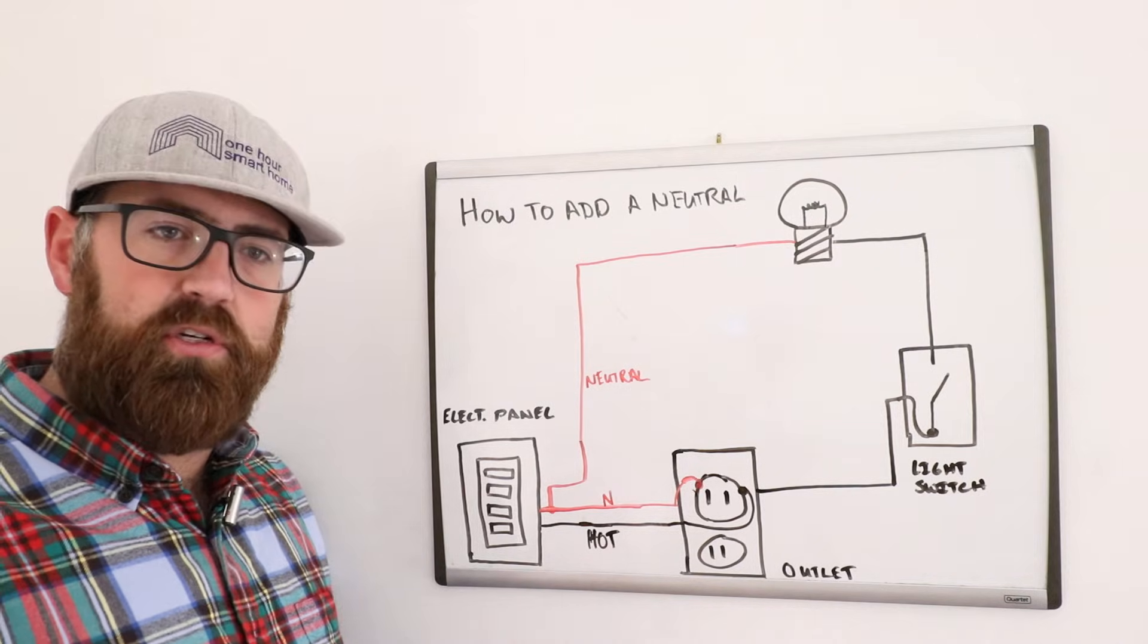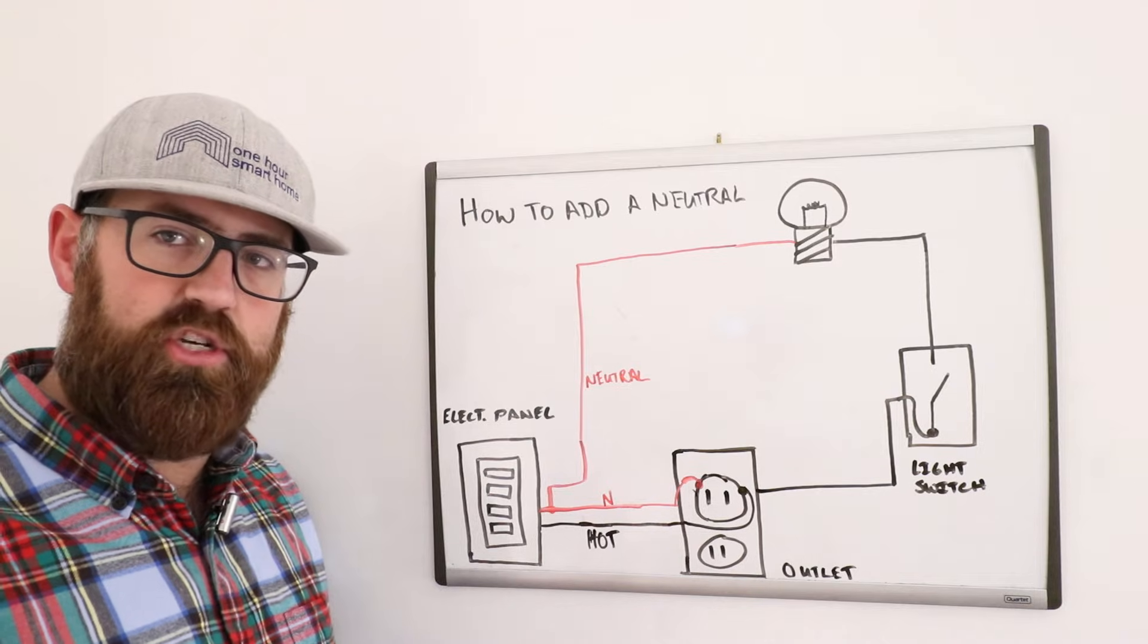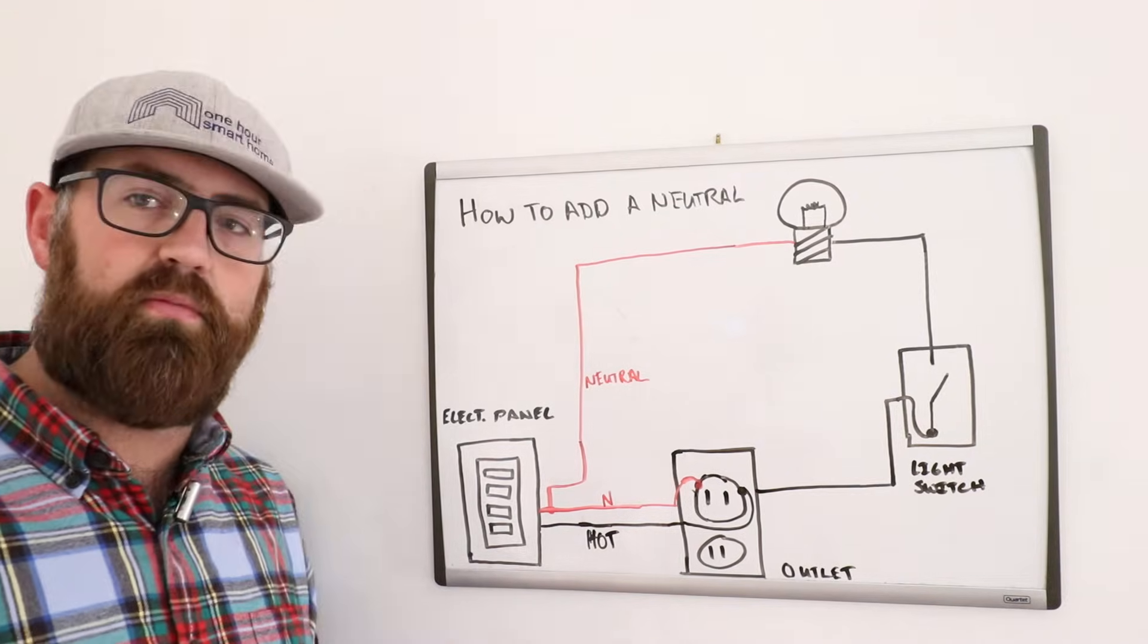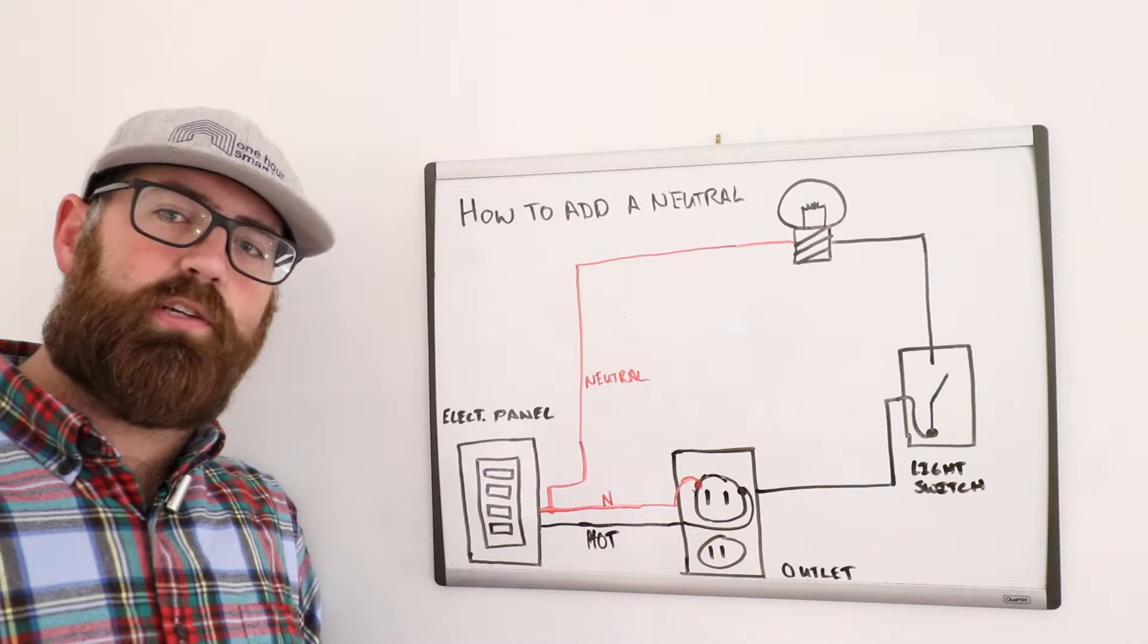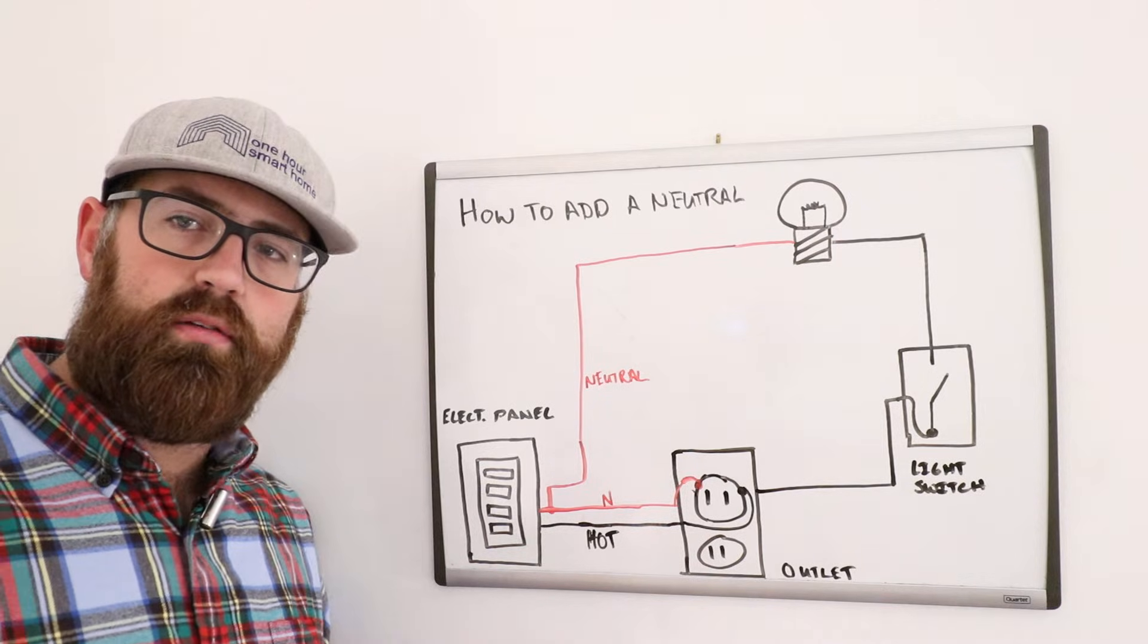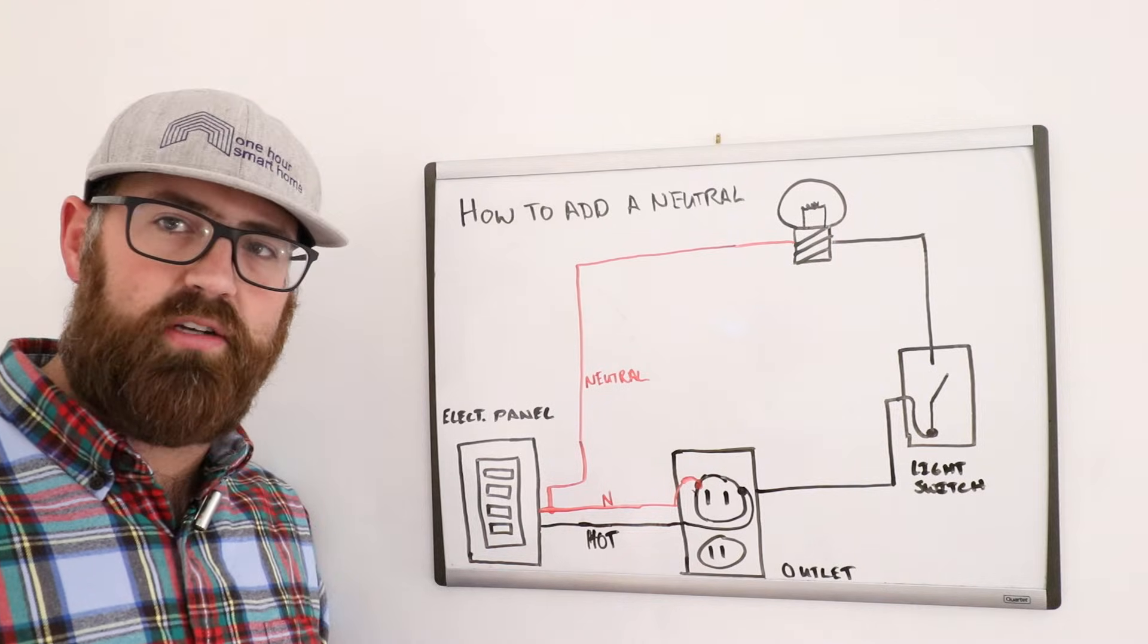And in your home, you're going to have multiple circuits. You're probably going to have one for the kitchen, one for your living room, one for bedrooms or individual bedrooms. They're all going to have an electrical circuit. And each electrical circuit is really defined by it has a hot wire side of it and it has a neutral wire side of it.